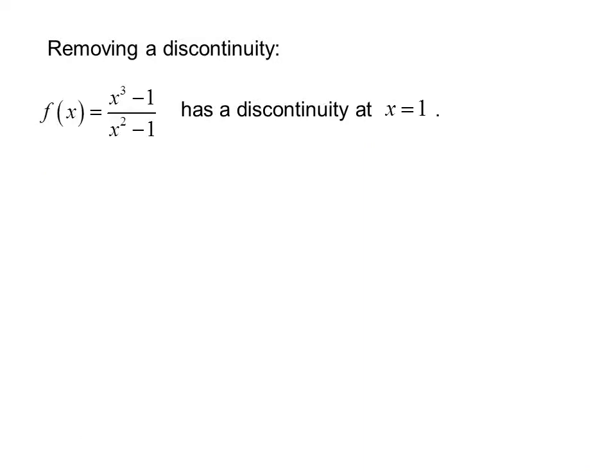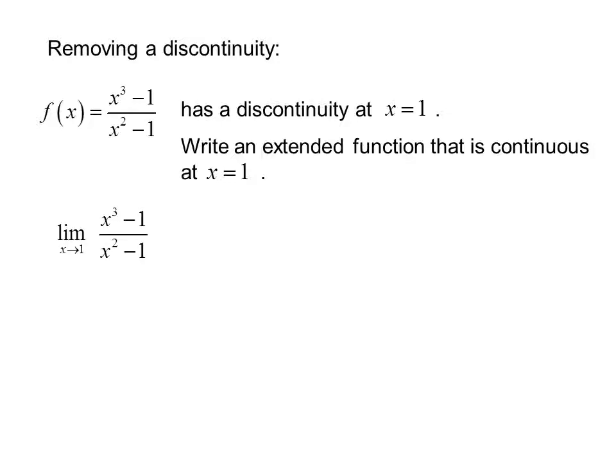Removing a discontinuity. This example has a discontinuity at x equals 1. Let's write an extended function that is continuous at x equals 1. If we take the limit as x approaches 1 of x cubed minus 1 over x squared minus 1, we can factor the numerator and denominator and cancel out the x minus 1.